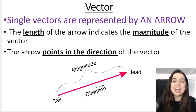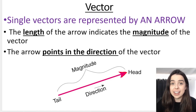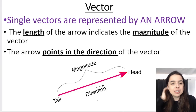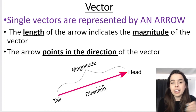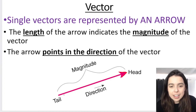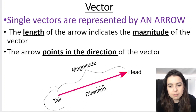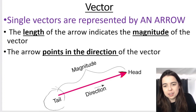Before we jump into the head-to-tail diagram, we need to discuss what a tail is and what a head is when it comes to a vector. The length of the vector indicates the magnitude, and the direction it's pointing indicates the direction of the vector. The tail is the end without the arrowhead, and the head is the pointy part — otherwise known as the arrowhead.